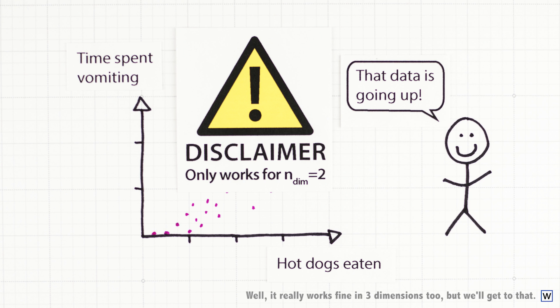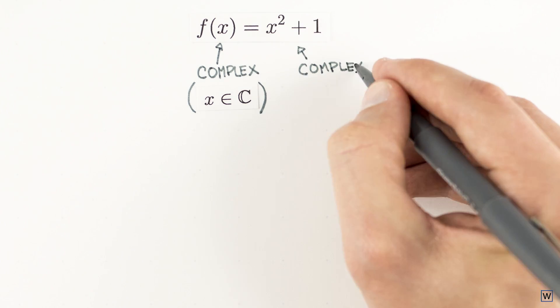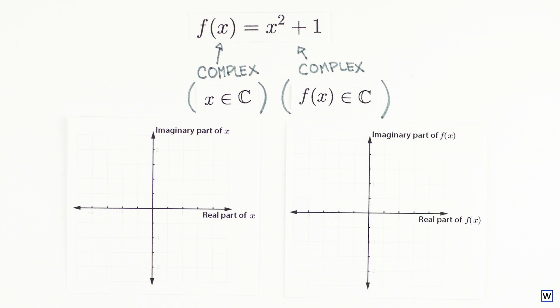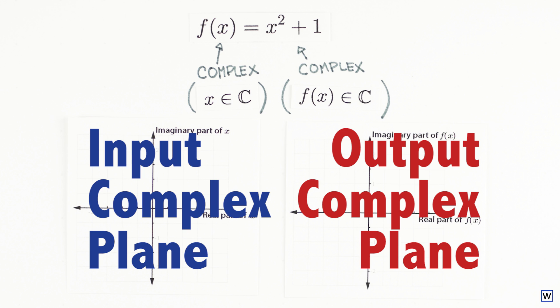This limitation becomes a real problem when we start to think about functions of complex variables. These functions take in complex numbers for their inputs, and for the most part also output complex numbers. This means the numbers we put in and get out of our function no longer fit on number lines. We need two complex planes to keep track of our numbers—one for our input, and one for our output.